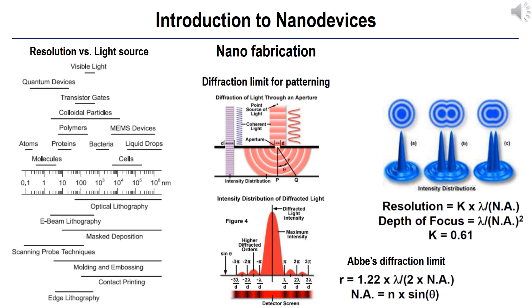For multiple slits, diffraction of light will produce Airy function-like light distribution patterns for each slit. If two neighboring slits are close enough together, the point spread functions will overlap. Two close slits or features will produce non-separable light distribution patterns, appearing like a single slit. Using mathematical analysis of wave interference, we can calculate the resolvable separation as a function of wavelength and numerical aperture. According to Abbe's diffraction limit, the resolution R is linearly proportional to wavelength and inversely proportional to numerical aperture. Therefore, it is important to decrease the light source wavelength and increase the numerical aperture — in particular, increasing the refractive index n of the background medium.